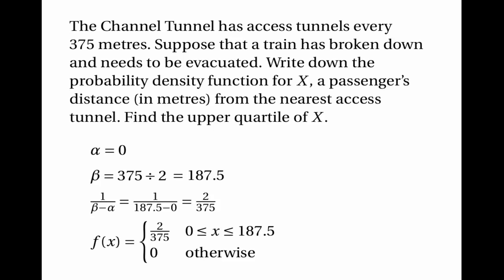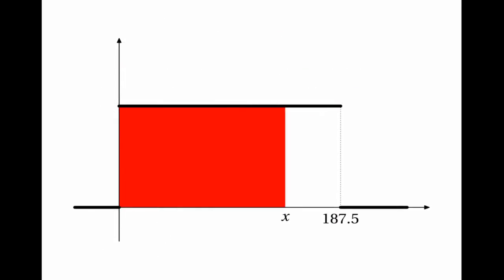To work out the upper quartile of x, we need the area under the graph to be three quarters, since the upper quartile is where the cumulative probability is three quarters. Because the probability distribution is uniform, x is simply three quarters of the way up to 187.5. So x is three quarters of 187.5, which is 141 to three significant figures.